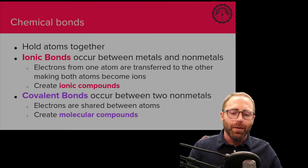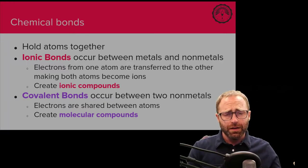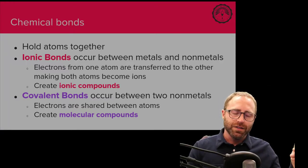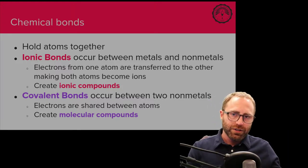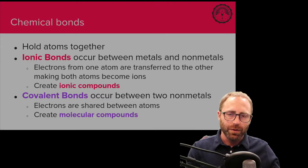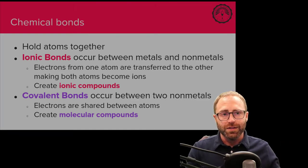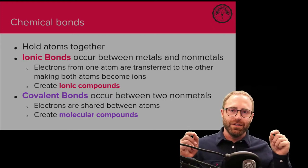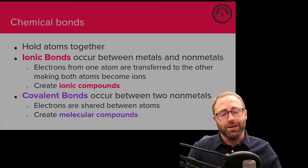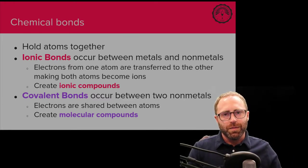A covalent bond occurs between two non-metals, where electrons are shared between atoms rather than transferred. In ionic bonding, an electron is definitively given from one atom to the next. In covalent bonding, atoms just share electrons — nobody truly gains and nobody really loses. You could think of ionic bonds as capitalistic and covalent bonds as sharing alike.